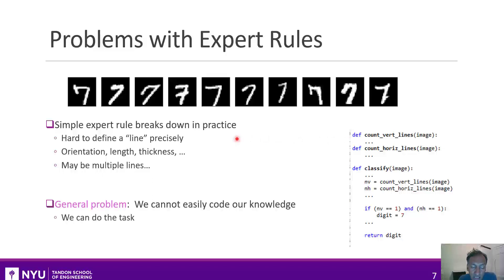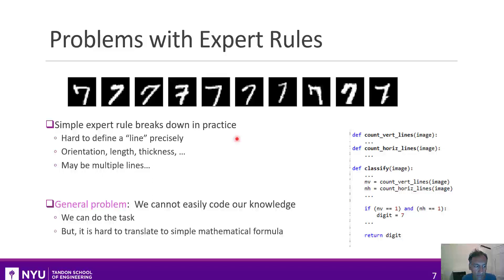The point is that we can do the task, but it's very hard to get a computer to encode all our knowledge. When we describe things — like a digit with one vertical line and one horizontal line — we can only do that description because other people who hear it have high-level ways of understanding those concepts. It's very difficult to translate that into some simple formula or a precise mathematical or computer set of instructions.